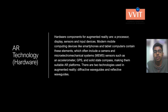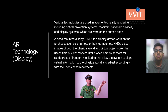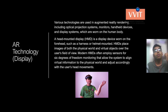Various technologies are used in augmented reality rendering, including optical projection systems, monitors, handheld devices, and display systems worn on the human body. A head-mounted display (HMD) is a display device worn on the forehead such as a harness or helmet mount. HMDs display images of both the physical world and virtual objects over the user's field of view. Modern HMD software employs sensors for six degrees of freedom monitoring, allowing the system to align virtual information to the physical world and adjust with the user's head movements, so the user can see both the real world and virtually created objects simultaneously.